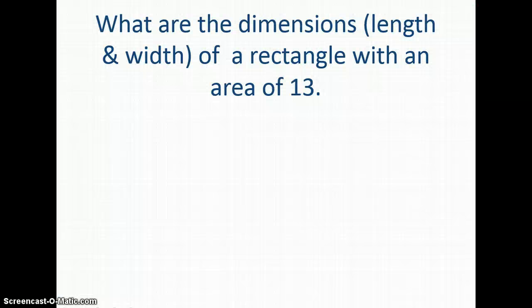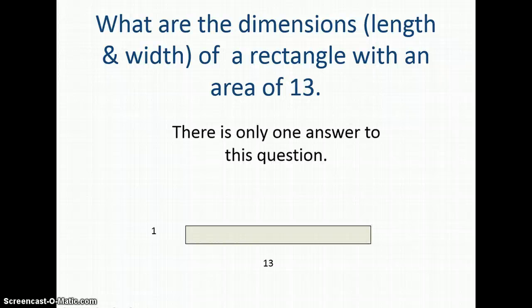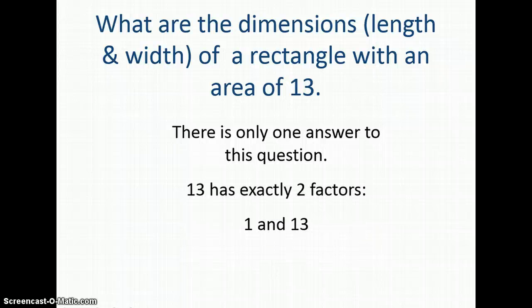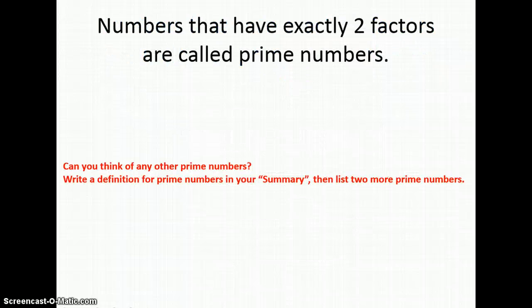Looking more closely at thirteen: it didn't work because they needed three factor pairs, and thirteen didn't have any. There is only one rectangle possible — a one by thirteen. Thirteen has exactly two factors: one and thirteen, which is one factor pair. Thirteen is what we call a prime number. Prime numbers have exactly two factors. Can you think of any other prime numbers? Write a definition for prime numbers in your summary, then list at least two more prime numbers.